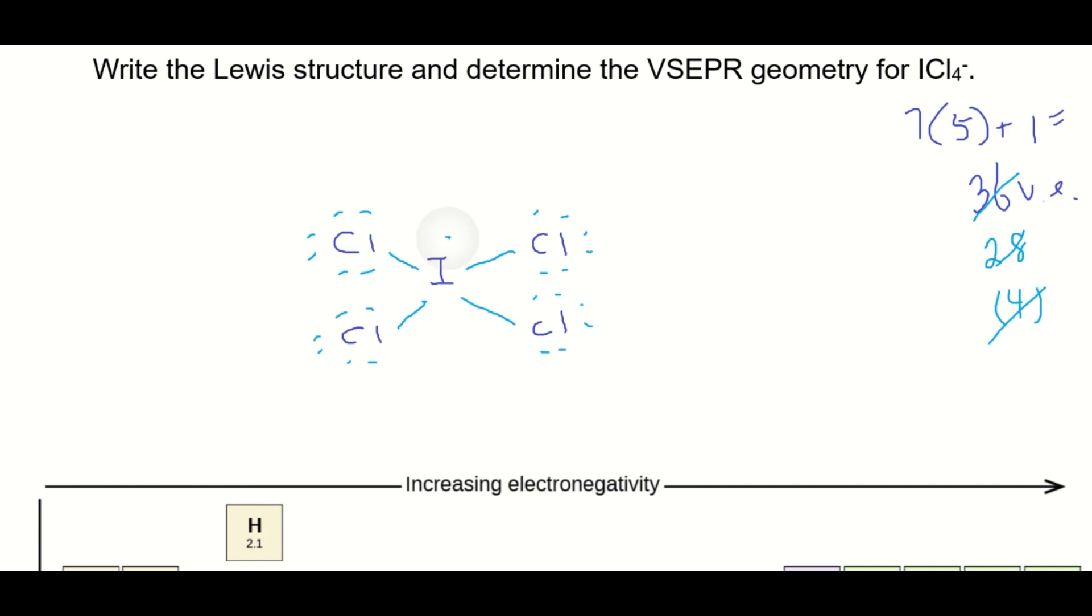Let's put the remaining 4 on the central iodine. And then we can put brackets around these and put the negative there for the charge on that polyatomic ion.